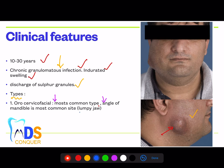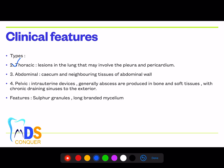A commonly asked question is: what is 'lumpy jaw'? The answer is actinomycosis — most common at the angle of the mandible in the oral cervical facial type. The second type is thoracic, mainly involving lesions in the lungs, pleura, and pericardium. The third type is abdominal, where the abdominal wall is most commonly affected. The fourth type is pelvic, most commonly seen in women using intrauterine devices.